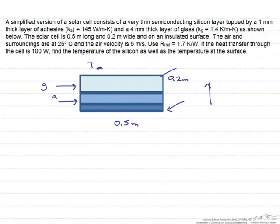We have an air temperature of 25 degrees C, and we have a free stream velocity of 5 meters per second. We're also given a radiative resistance, which we'll use in part two of this problem.